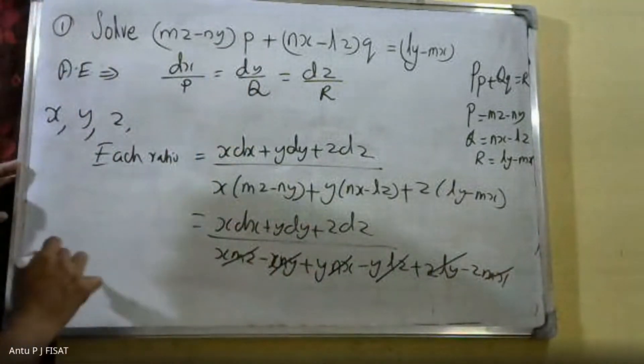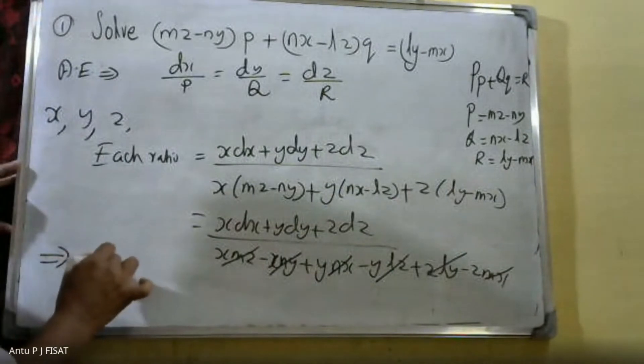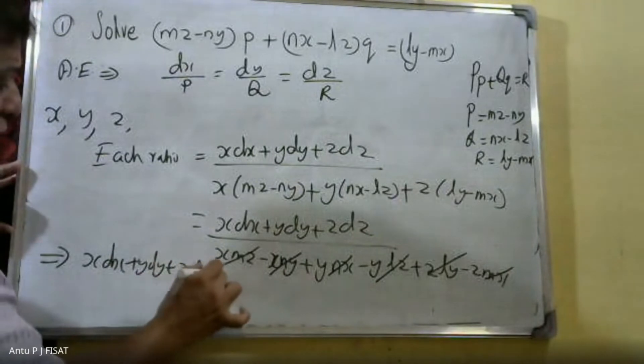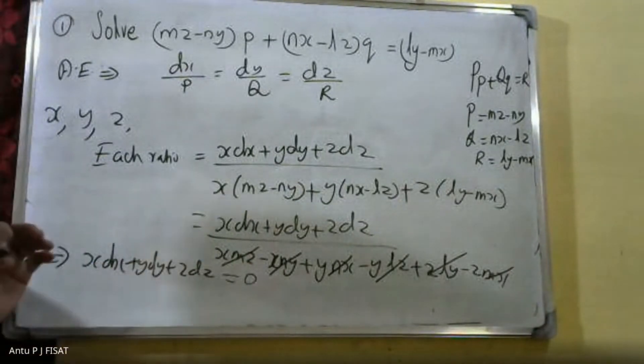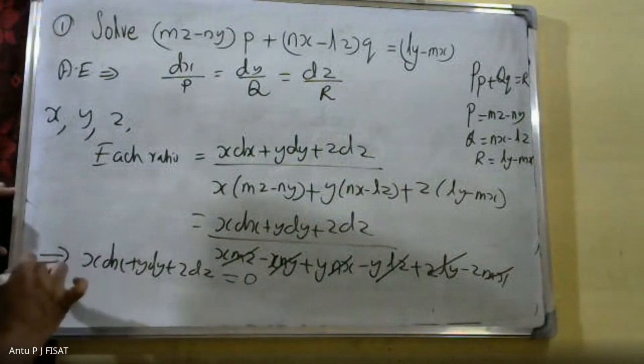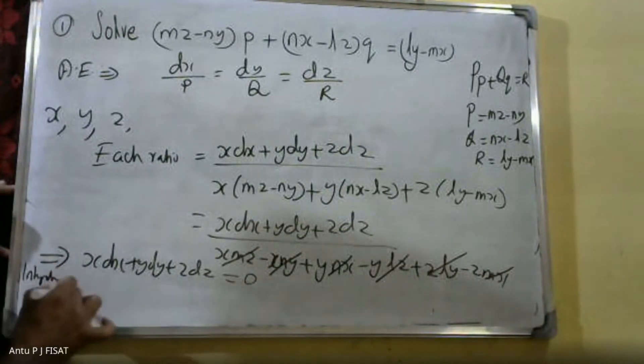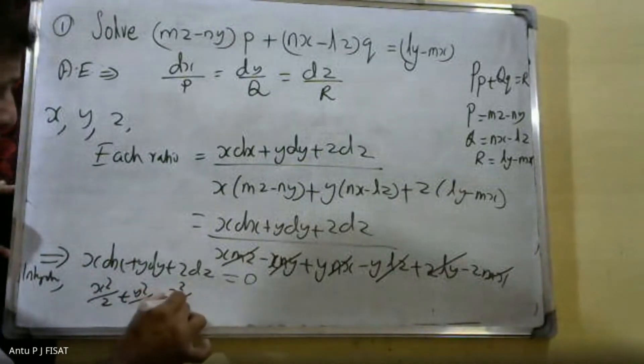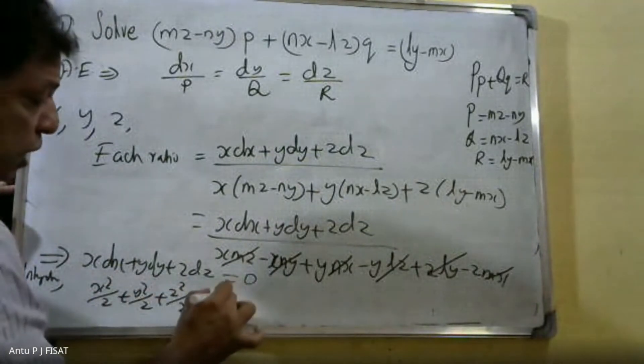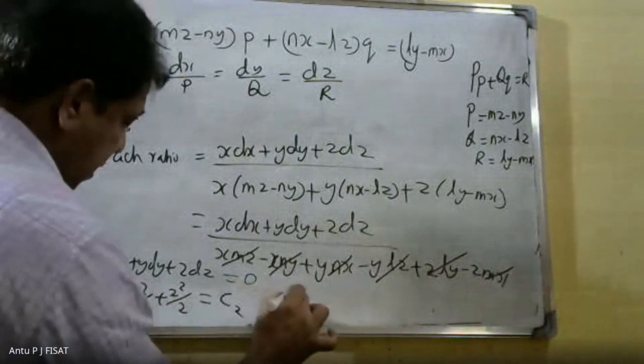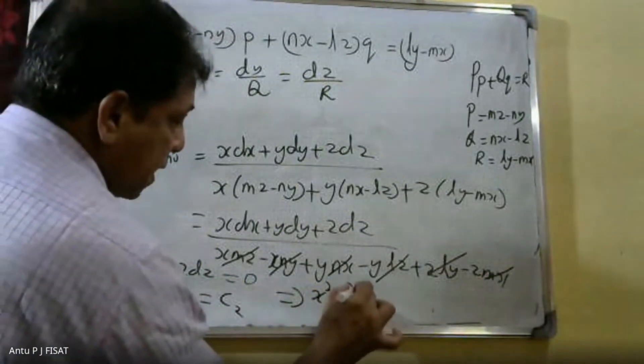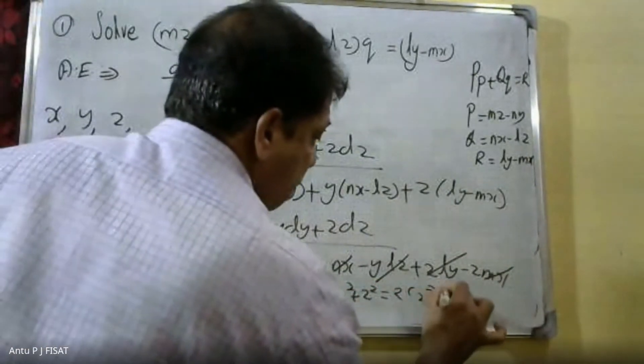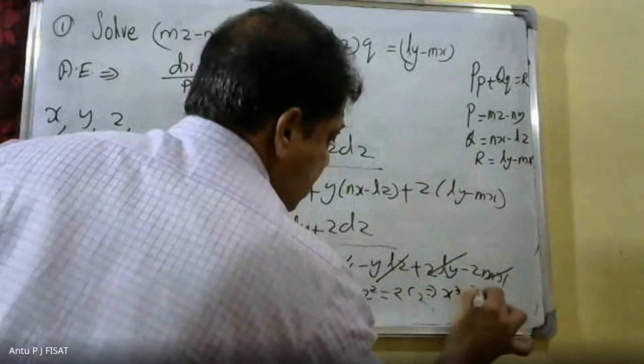Therefore, xdx + ydy + zdz = 0. Integrating, we get x²/2 + y²/2 + z²/2 = C₂. Therefore, x² + y² + z² = 2C₂.